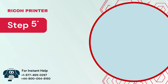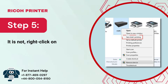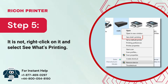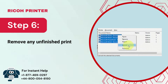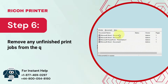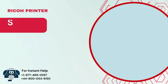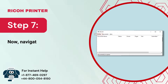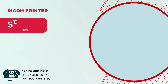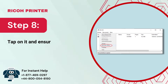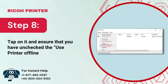Step 5: If it is not, right-click on it and select 'See what's printing.' Step 6: Remove any unfinished print jobs from the queue. Step 7: Navigate to the queue window and go to the Printer tab. Step 8: Tap on it and ensure that you have unchecked the 'Use Printer Offline' option.